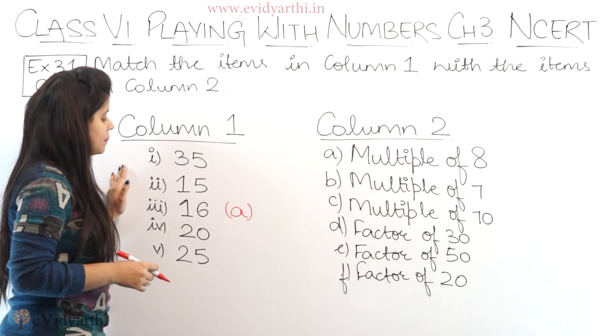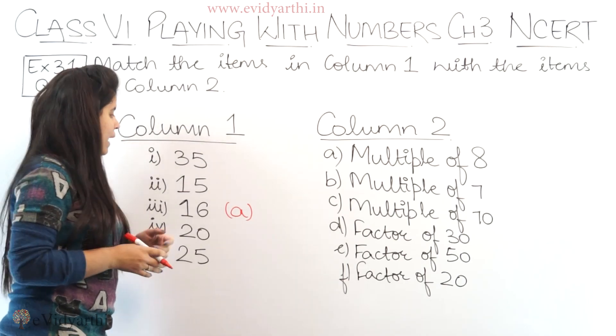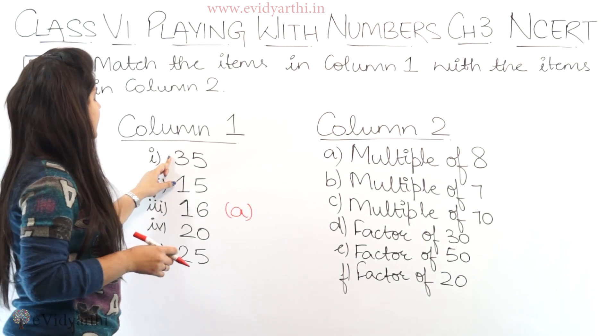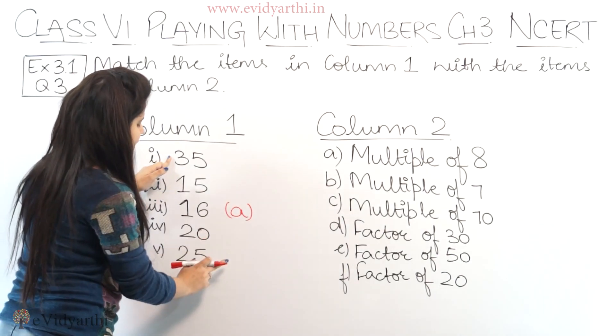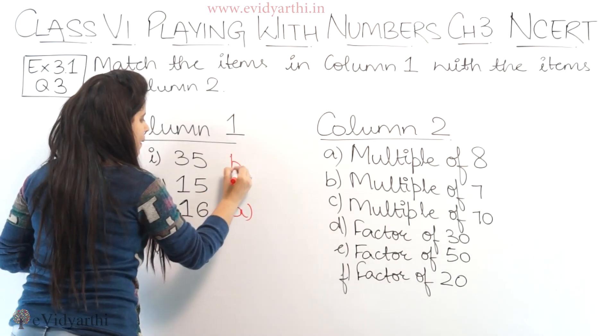Now, multiple of 7, let's see which one. Multiple of 7 means what comes in the 7 times table. 35 comes in 7's table, 15 doesn't come, 20 doesn't come, 25 doesn't come. So this means 35 will be part b.